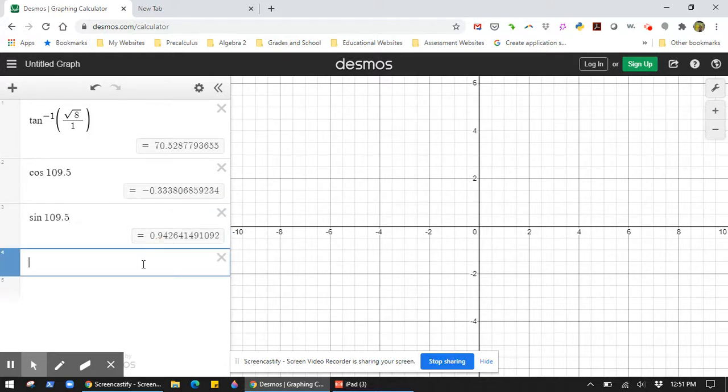And the sine of 109.5 degrees is 0.942. We want to compare that to square root of 8 divided by 3. And of course, they're close. They're not exact because of the rounding.